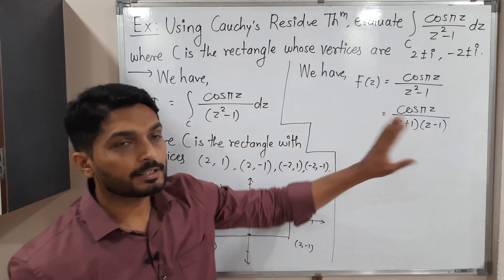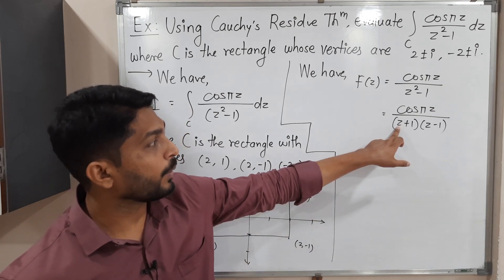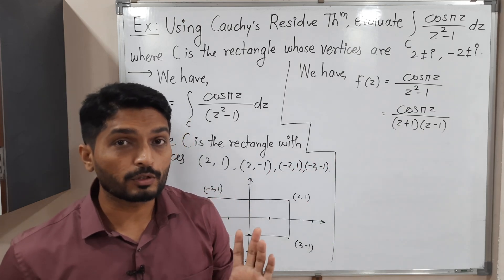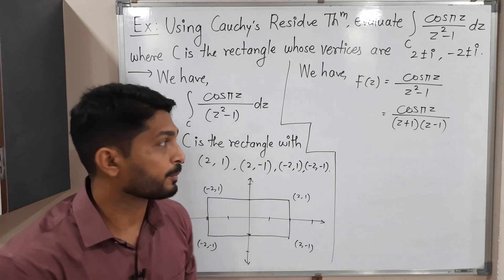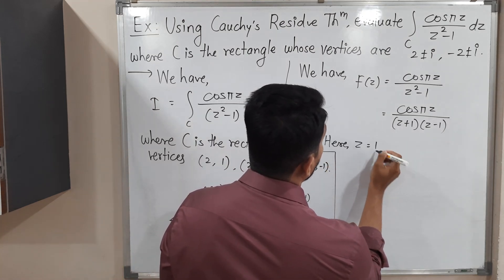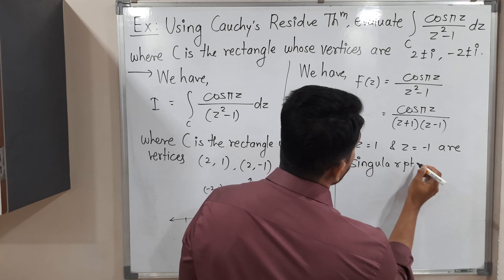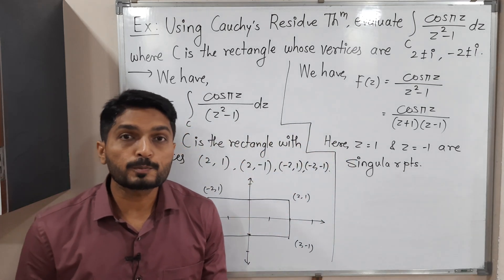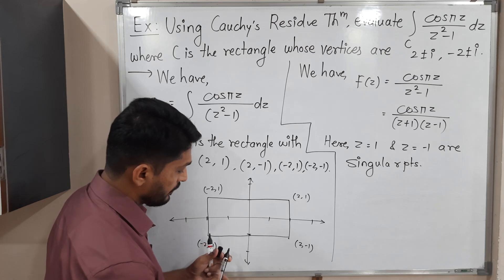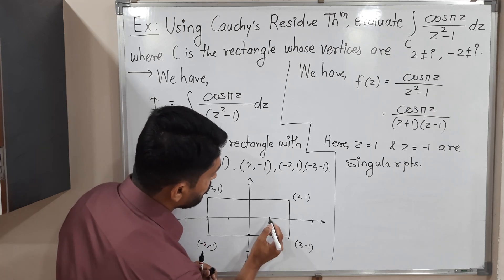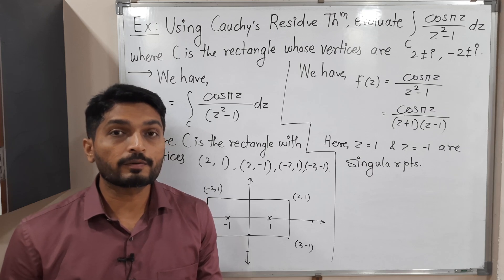Here the singular points are where the denominator is zero. If z = 1, then (1+1)(1-1) = 0, so z = 1 is a singular point. If z = -1, then (-1+1)(-1-1) = 0, so z = -1 is also a singular point. Checking on the diagram, z = 1 is here and z = -1 is here — both points are lying inside C.